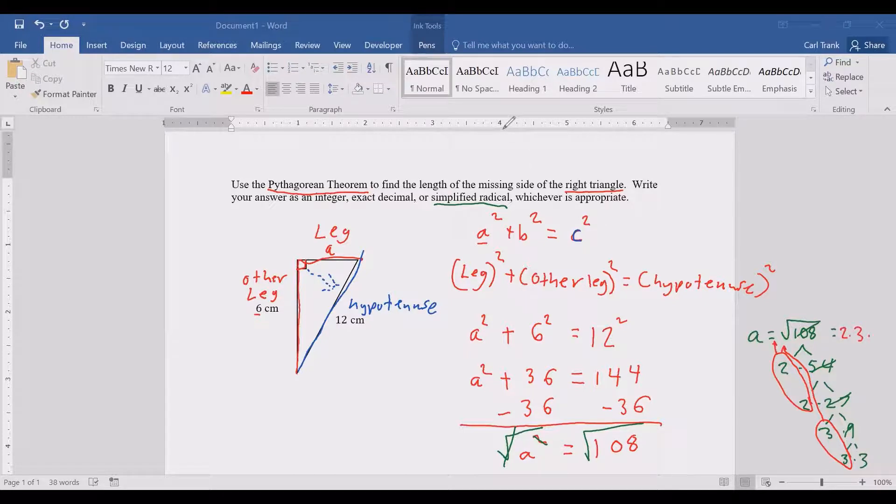So we are left with 2 times 3 times the square root of the number that did not get grouped up which is a 3. Altogether that means that A equals 6 square root of 3 and our label will be centimeters because we are trying to find a side of a triangle.